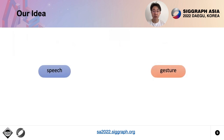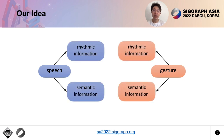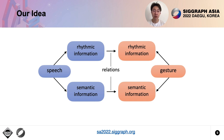To overcome the shortcomings of end-to-end models, our idea is to disentangle the rhythmic and semantic information from speech and gestures, and then explicitly model the relations between them to achieve the generation of both natural and meaningful motions.